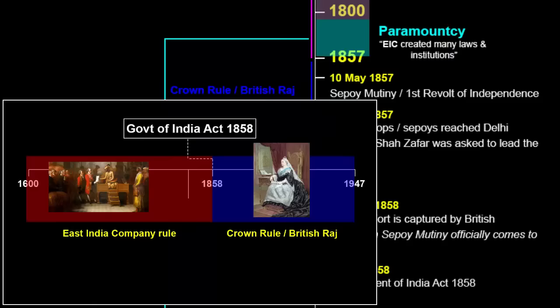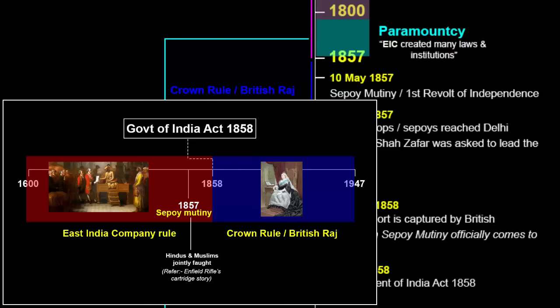An important point: in the 1857 revolt, both Hindus and Muslims jointly fought against the British. The British government realized that if the Indian society shared a common feeling, it would be the end of their rule. They needed to keep Indians busy with internal problems so they could rule without distraction. That is when the British adopted the policy of divide and rule — wanting to look good by adopting modern principles of liberty, equality and justice for colonial modernization, while simultaneously encouraging casteism and communalism.